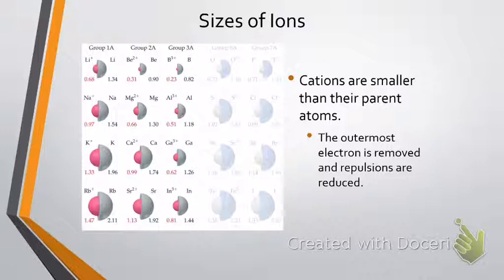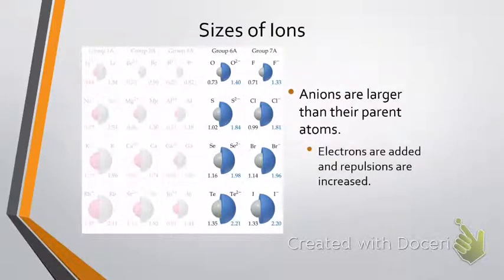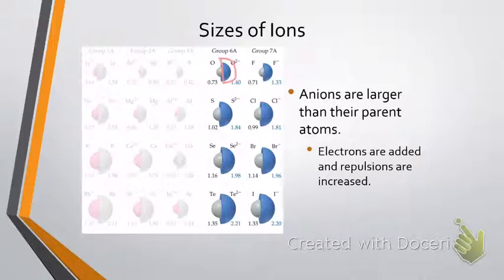What happens if we look at anions? Anions are larger than what they started off with. Looking at oxygen: the original neutral atom went from 0.73 to 1.4 angstroms when it gains 2 electrons. The reason why is as you add more electrons, they start to repulse each other, and as they repulse each other, they want to take up more space because they want to get away from each other — they're crowded.